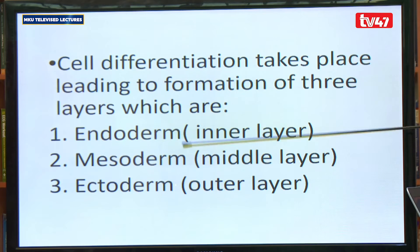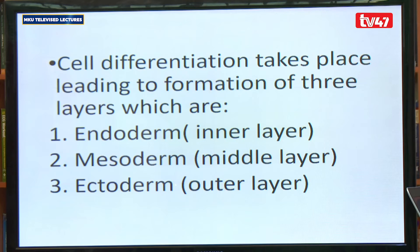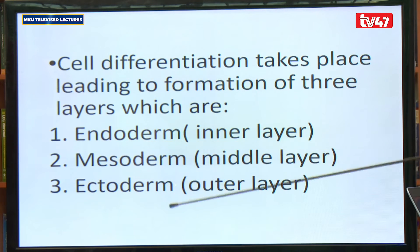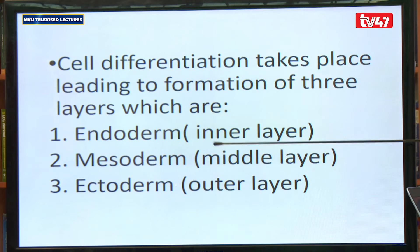Each layer may be responsible for developing into specific organs — for example, the heart, the respiratory system, the reproductive system, the skin, and so on. Each of these layers has specific body organs which they develop into.